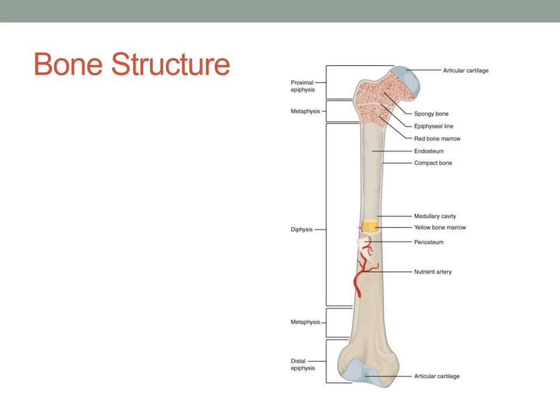Going down from that, you see the spongy bone where the epiphysis is, and then just below that you see the epiphyseal line. This is the area of the metaphysis where bone growth occurs. We'll talk about how bone growth occurs at that epiphyseal line. Once bone growth stops, that epiphyseal line hardens and it becomes just a marking in the bone.